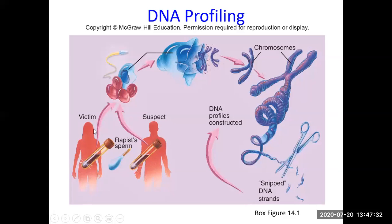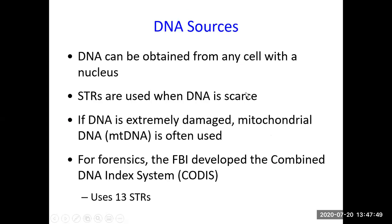In a rape case example, samples taken from the victim's clothing or body are analyzed alongside the suspect's sample. The DNA is cut into small pieces, electrophoresis is performed, and the banding patterns are compared. DNA can be obtained from any nucleated cell. If DNA is extremely damaged — such as in a natural disaster where a body has been underwater — mitochondrial DNA may be used instead.